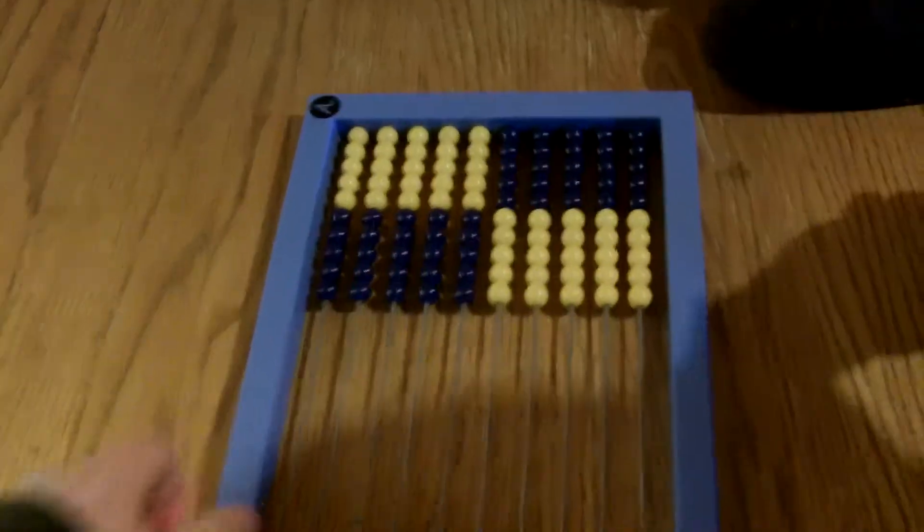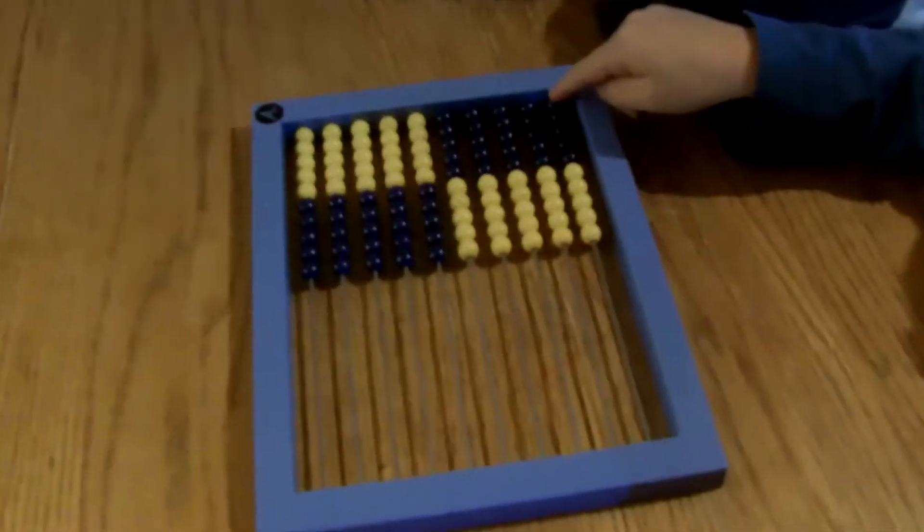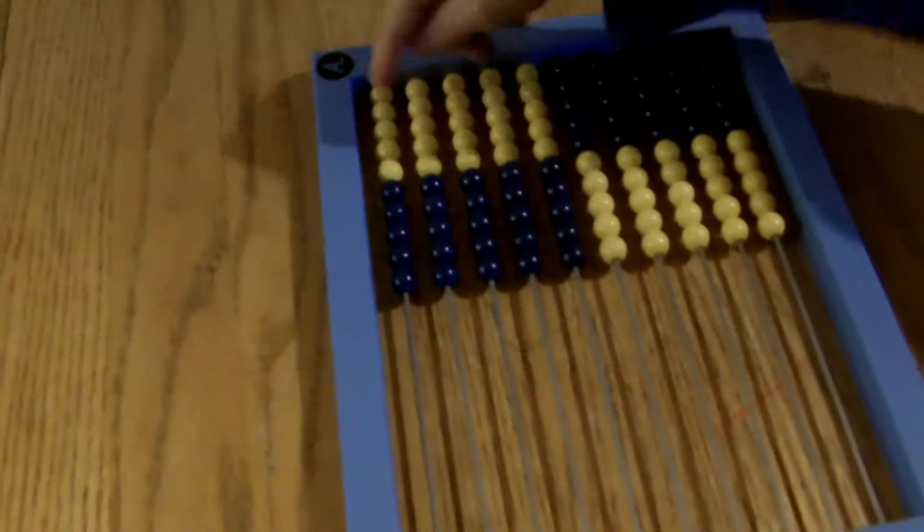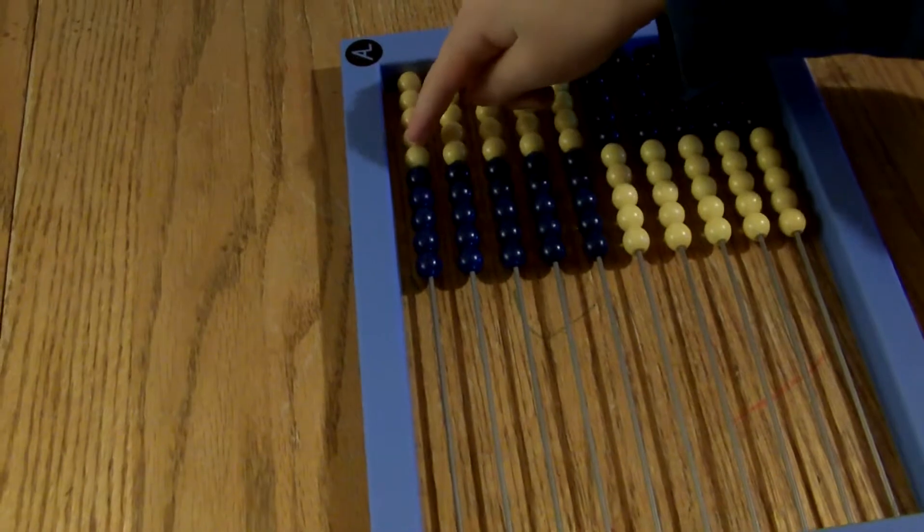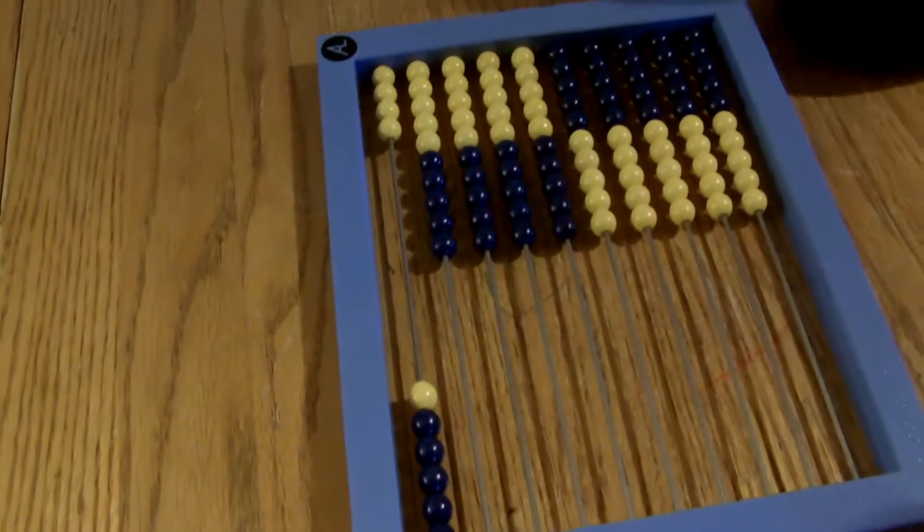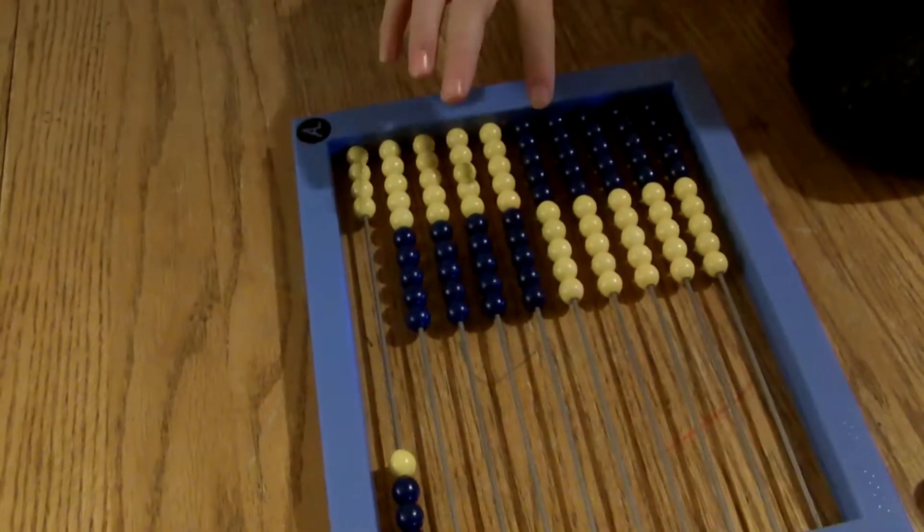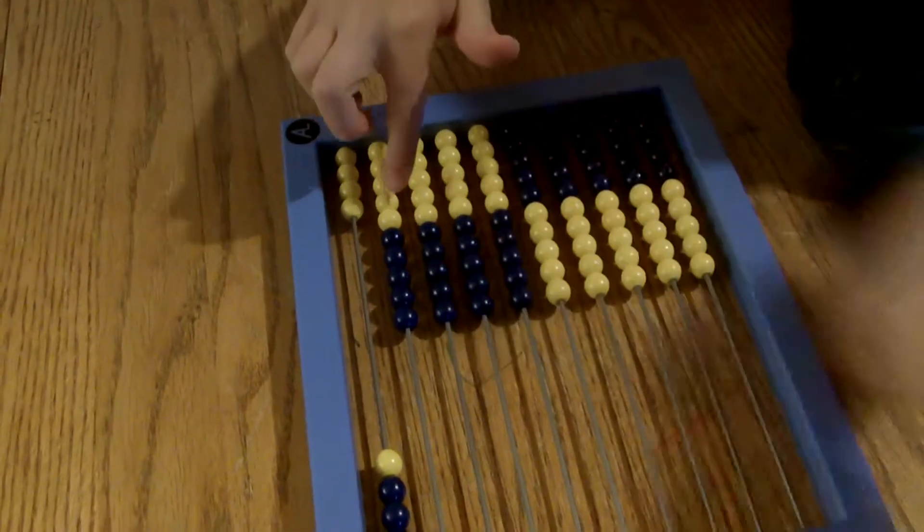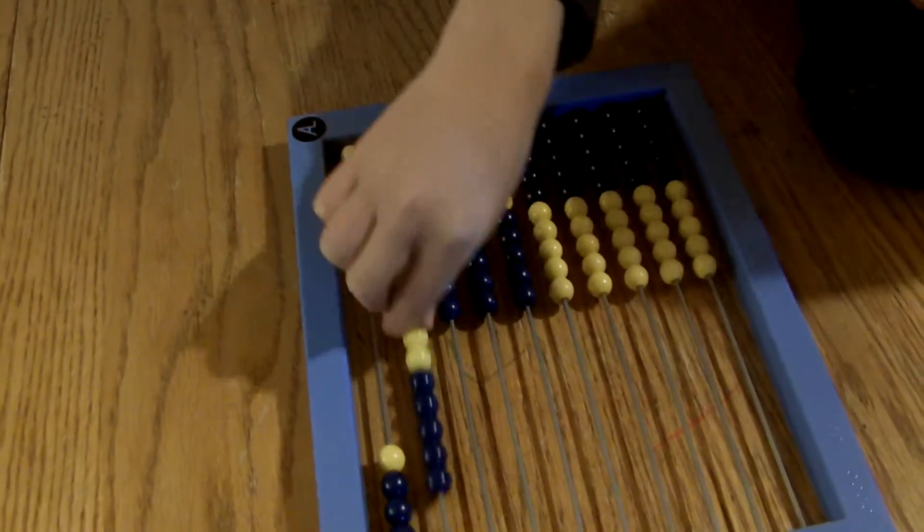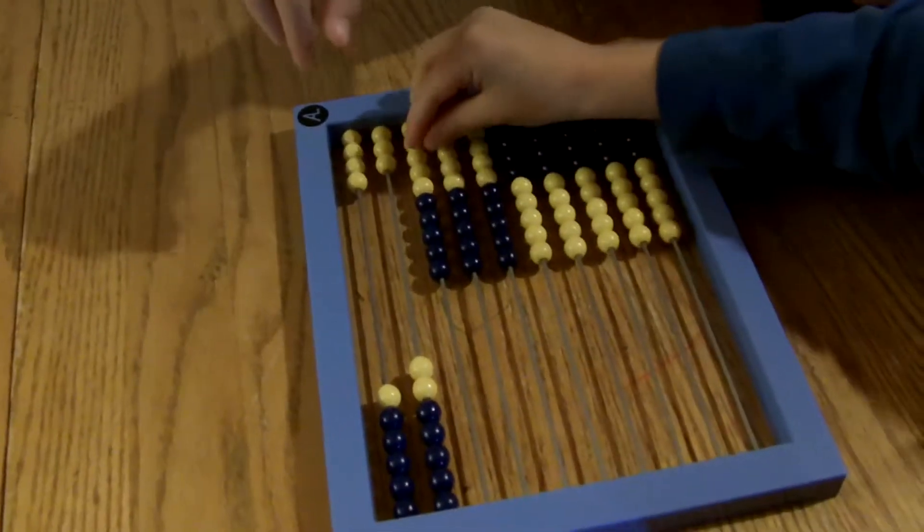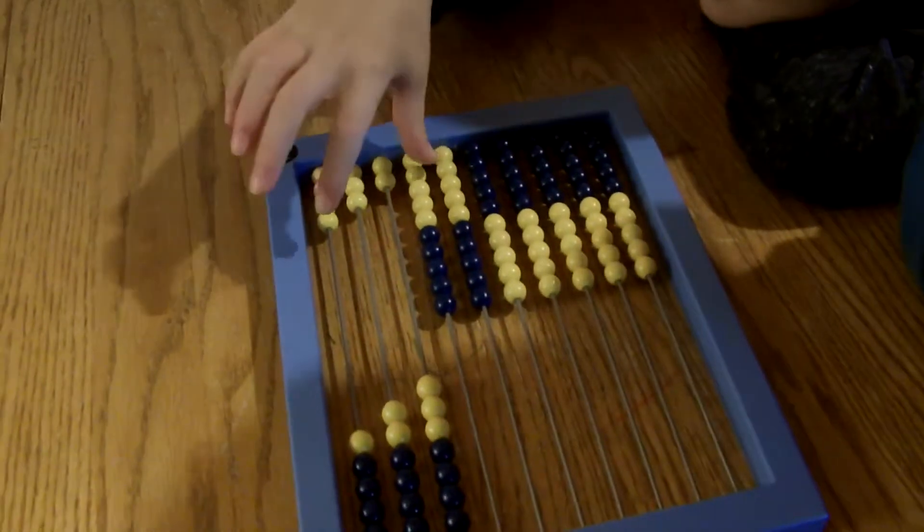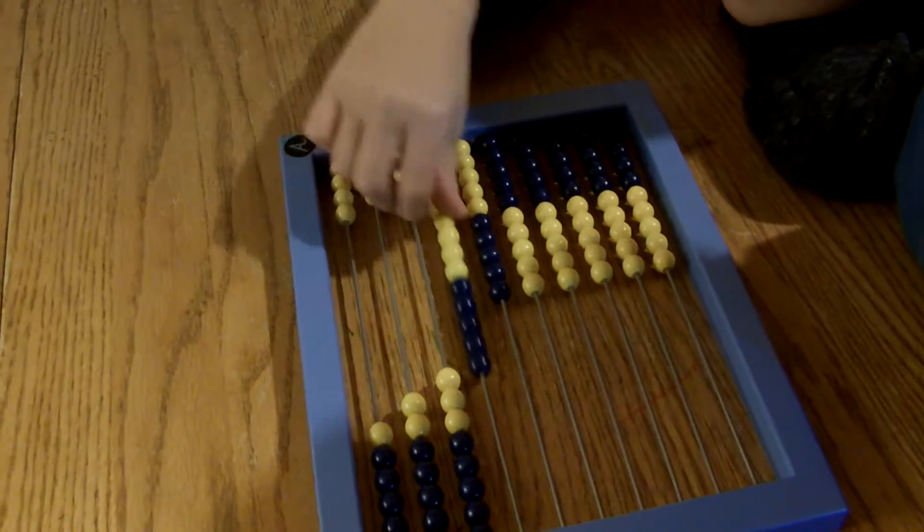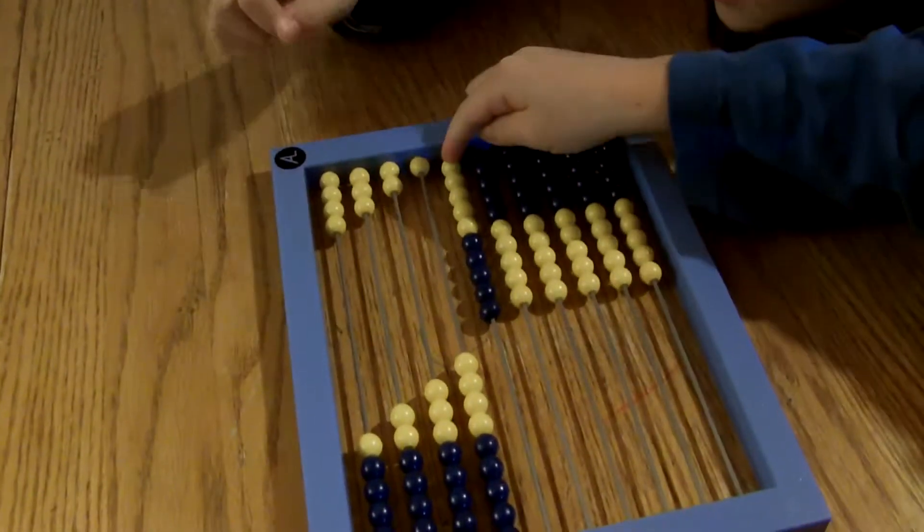If I wanted to do six on the first line, how would we show six? So this is five, so this would be six. Good job. Alex, how would we show seven on the next line? What about eight, Sammy? Nine, Alex? And ten, Sammy? It's all.